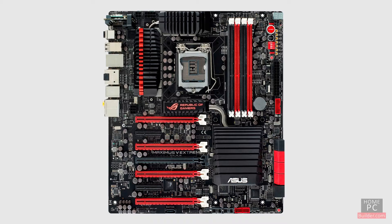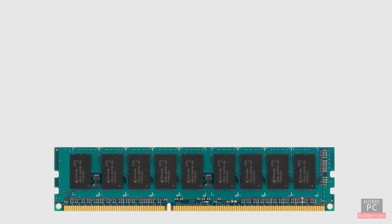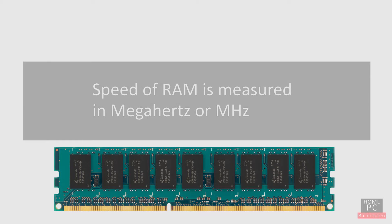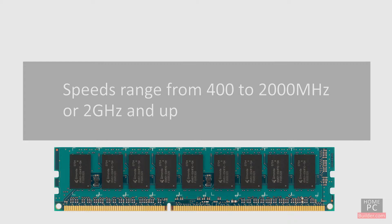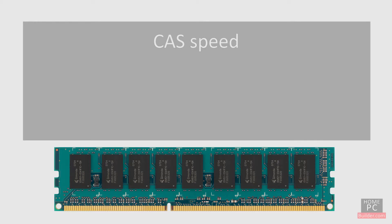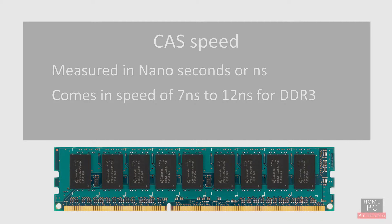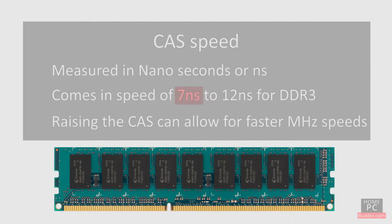The speed of the RAM is also important. The speed of memory is measured in MHz and ranges from 400MHz to 2000MHz, or 2GHz, and up. Generally, you should get the fastest RAM the motherboard you choose can handle. Another measurement of RAM speed is called CAS. It's measured in nanoseconds and comes in speeds of 7 to 12 for DDR3 RAM. A lower CAS is better. RAM makers raise the CAS of RAM in order to allow faster MHz ratings.